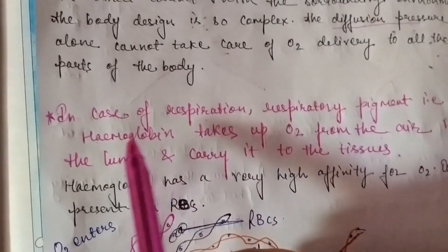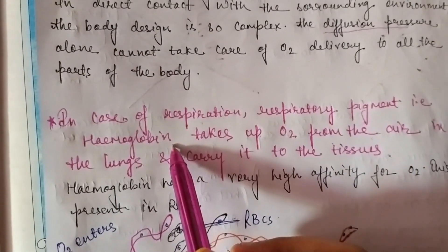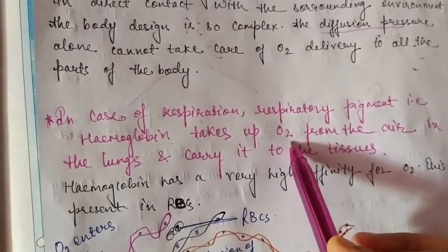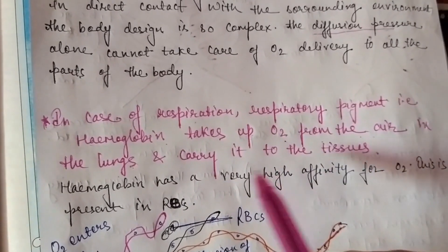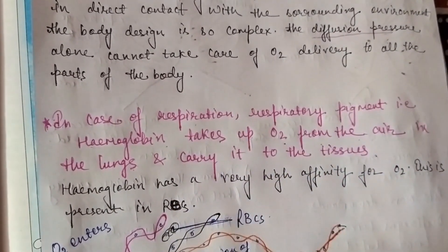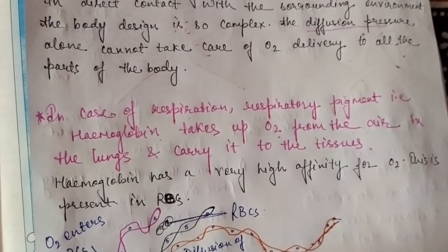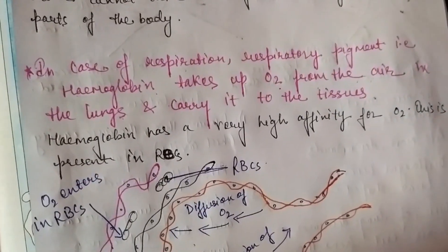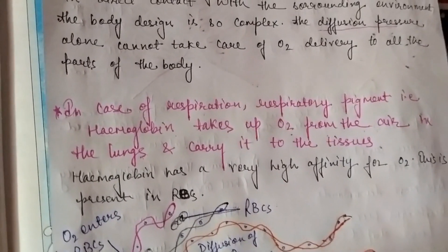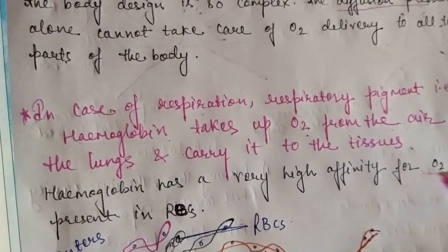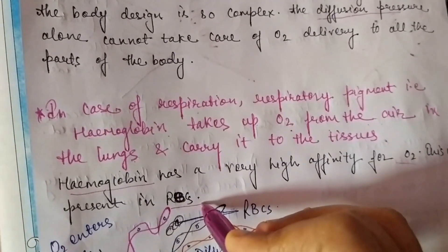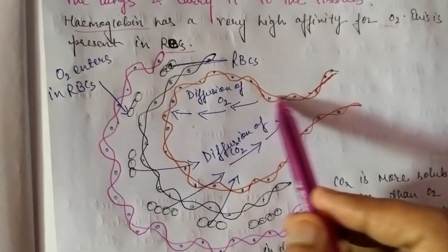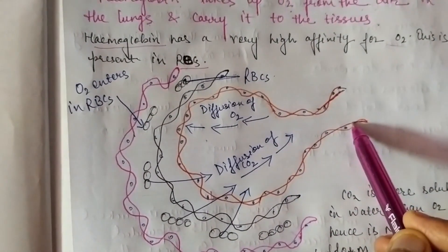A respiratory pigment called hemoglobin is present in the blood. Hemoglobin takes oxygen from the air and delivers it to the lungs and tissues. It takes carbon dioxide from all the tissues and carries it to the alveoli to be filtered. Hemoglobin has a very high affinity for oxygen and is present in RBCs — red blood cells. You can see in the diagram how gas exchange takes place in the alveoli.